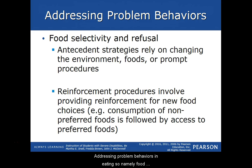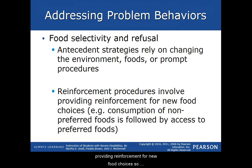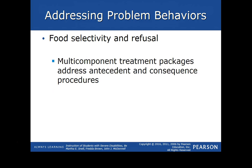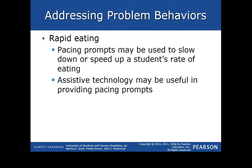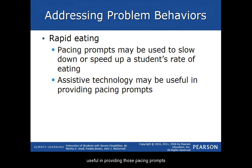Addressing problem behaviors in eating — namely food selectivity and refusal. Antecedent strategies rely on changing the environment, foods, or prompt procedures. Reinforcement procedures involve providing reinforcement for new food choices, so consumption of non-preferred foods is followed by access to preferred foods. There are also multi-component treatment packages that address both antecedent and consequence procedures. For rapid eating, pacing prompts may be used to slow down or speed up the student's rate of eating, and assistive technology may also be useful in providing those pacing prompts.